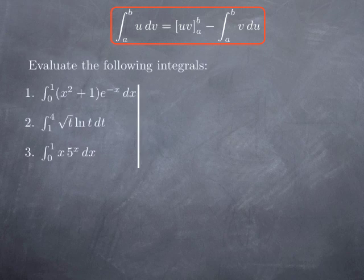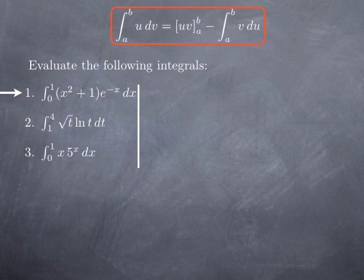Let's take a look at some examples. We're going to go over three examples, starting with the integral from 0 to 1 of the product of (x² + 1) with e^(−x). When using integration by parts, we have to pick what is going to be interpreted as u — which we differentiate — and what is going to be interpreted as dv — which we integrate.